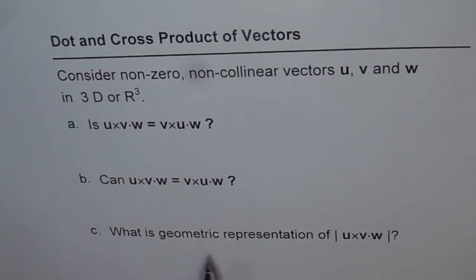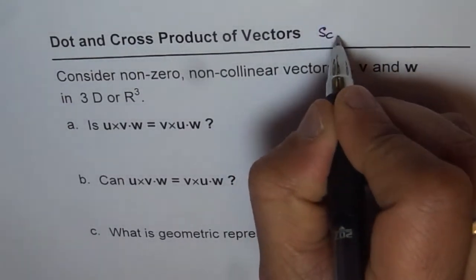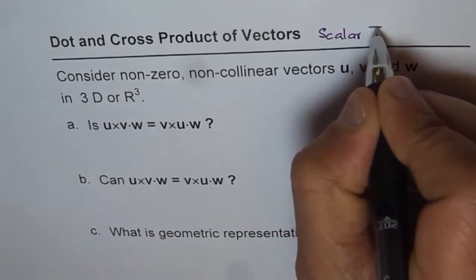And part C is, what is geometric representation of u cross v dot w? Think and answer. It's a good time to review scalar triple product. This is also called scalar triple product.